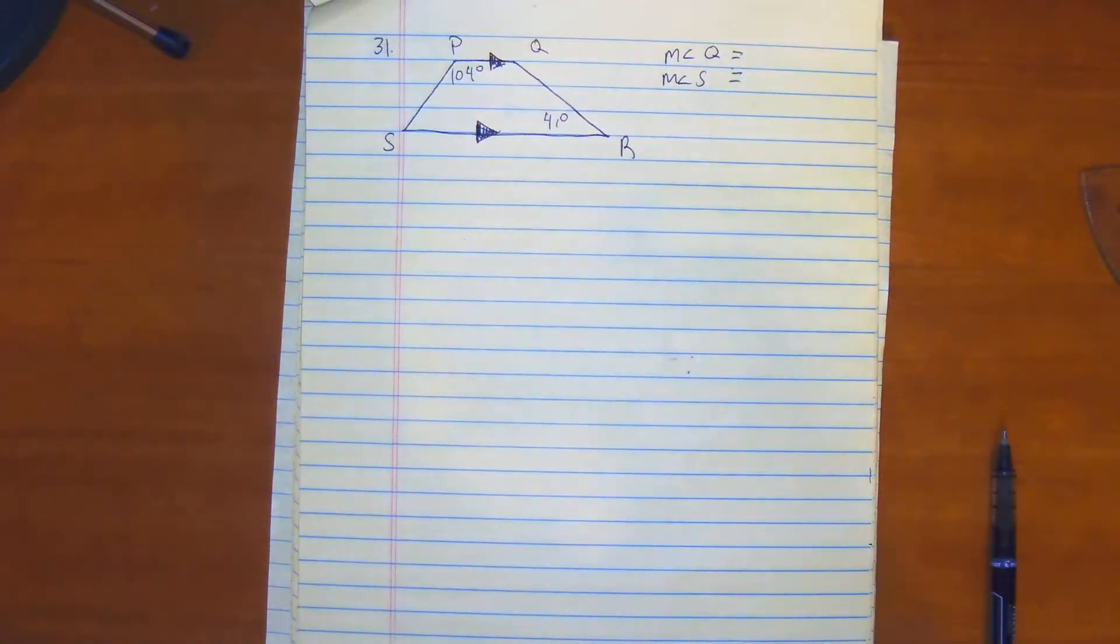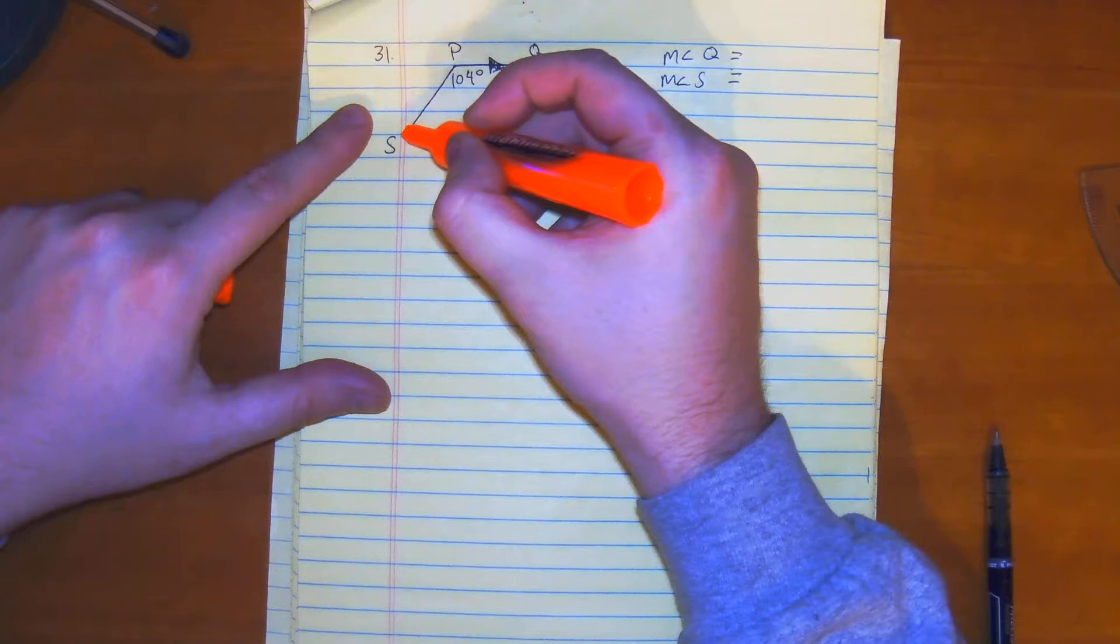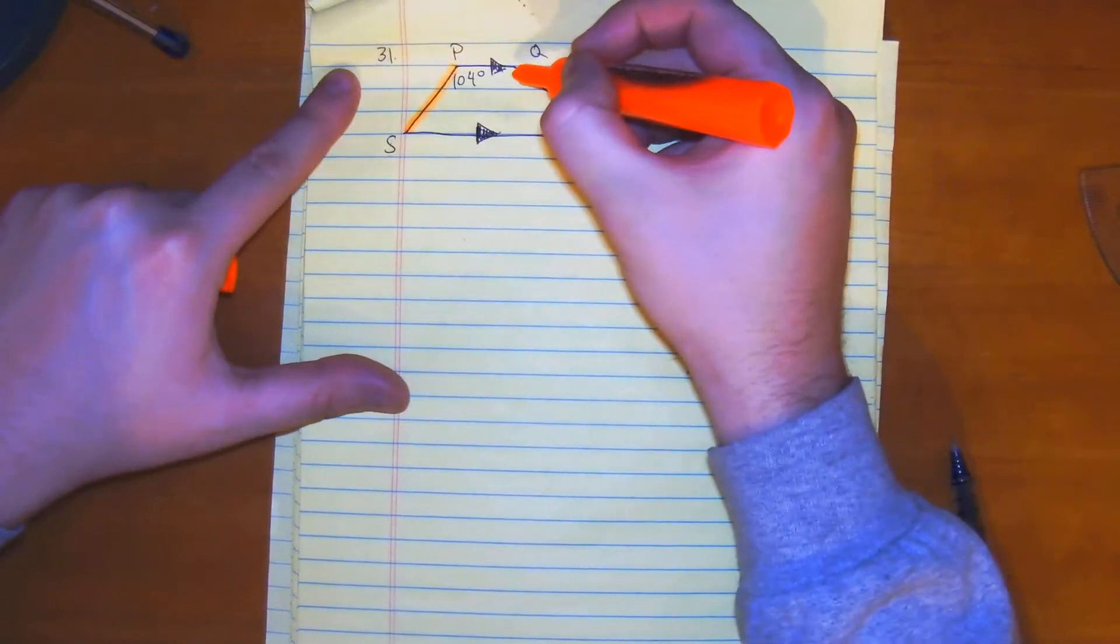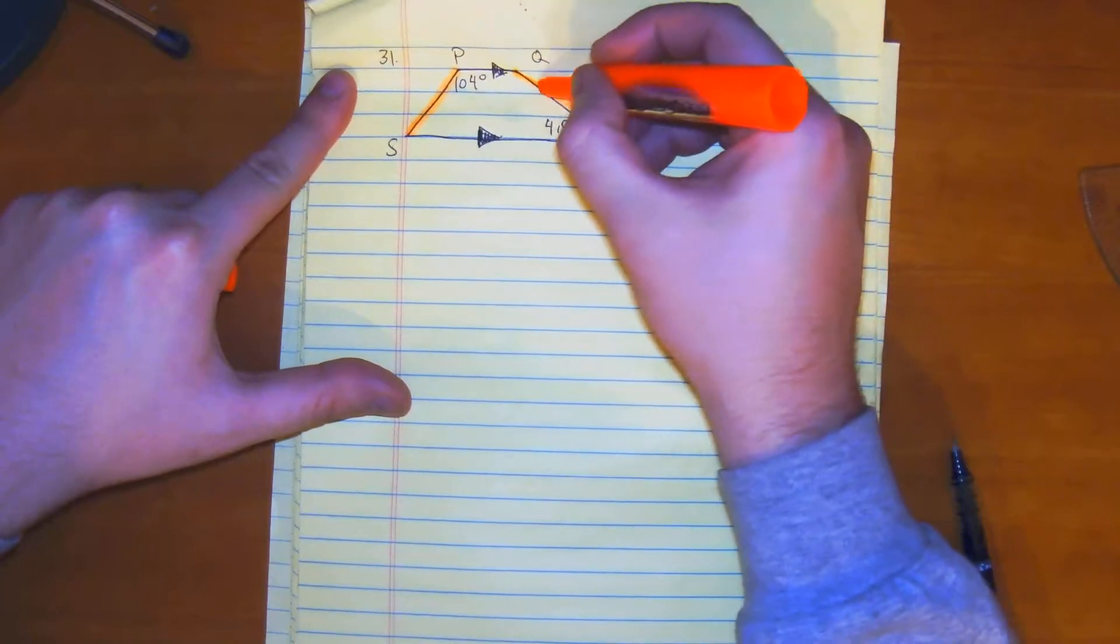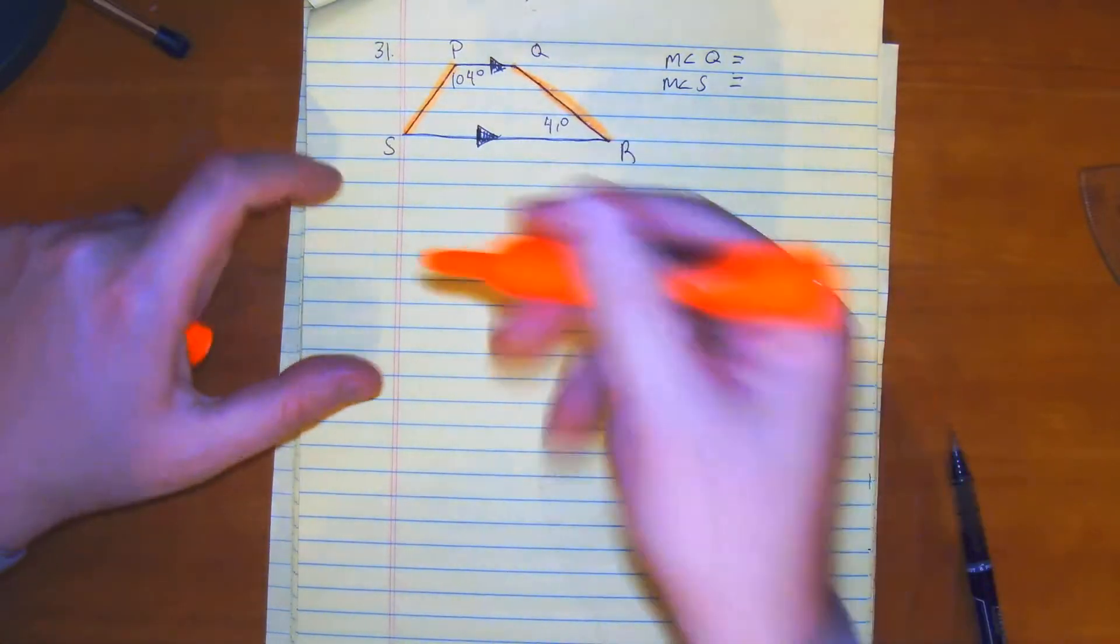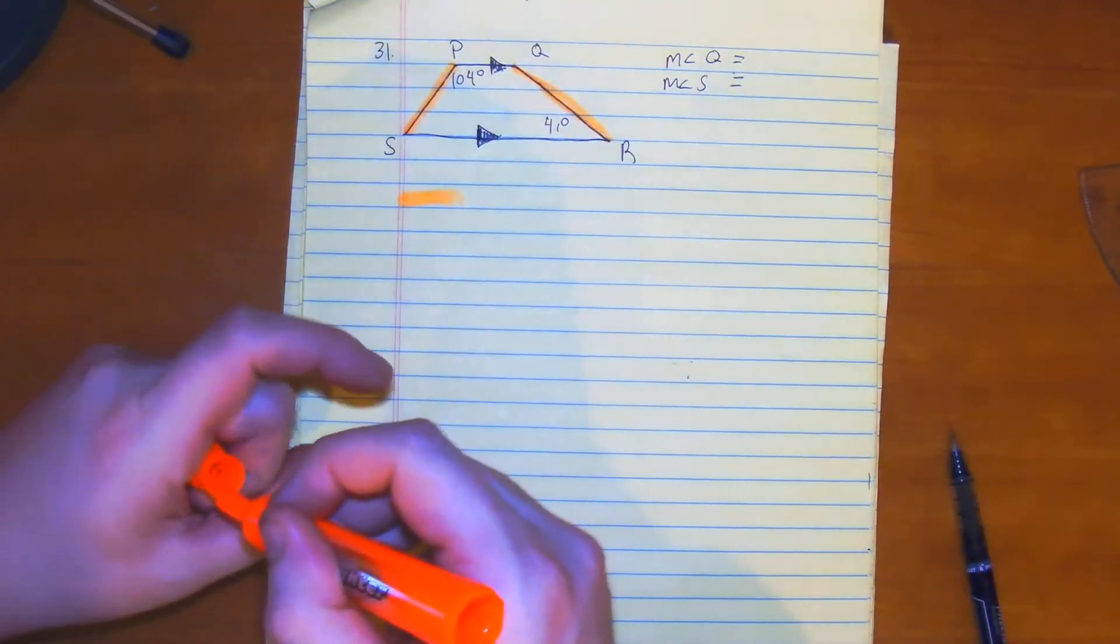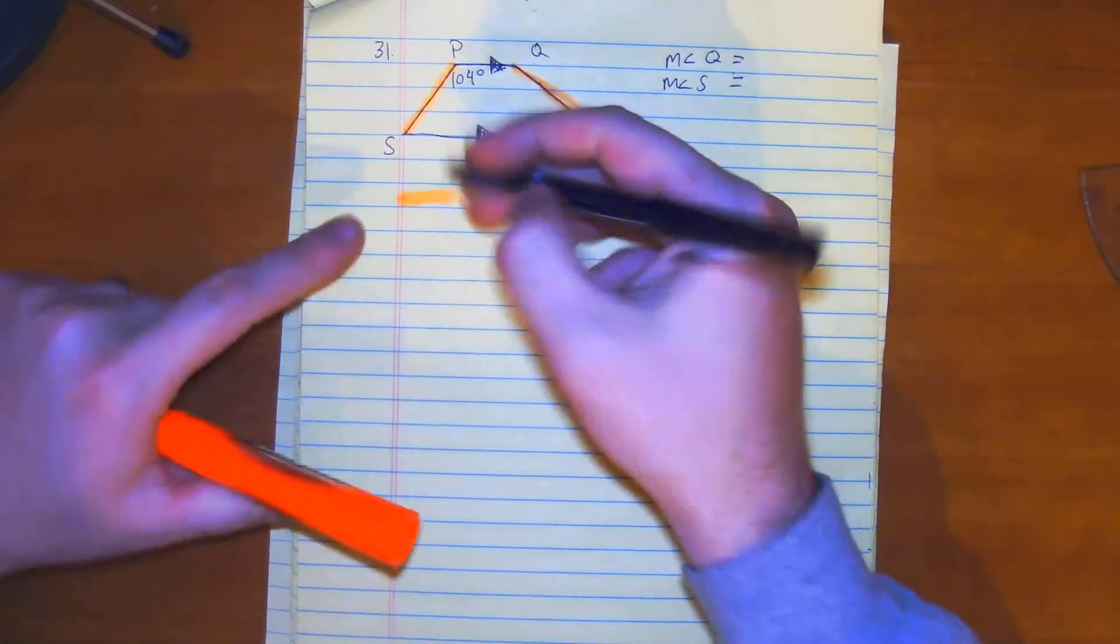So we do connect the sides between P and S and Q and R. When we connect those sides, we know the relationship is going to be consecutive interior angles.